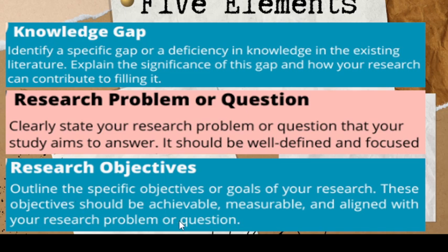For the research objective, outline the specific objectives or goals of your research. These objectives should be achievable, measurable, and aligned with your research problem or question. Achievable means within the time or deadline given to you — for example, within two months you should have finished your proposal, or be ready for final defense the following month. Measurable means you can quantify the information provided and accomplish it within the allotted time with the deadline.